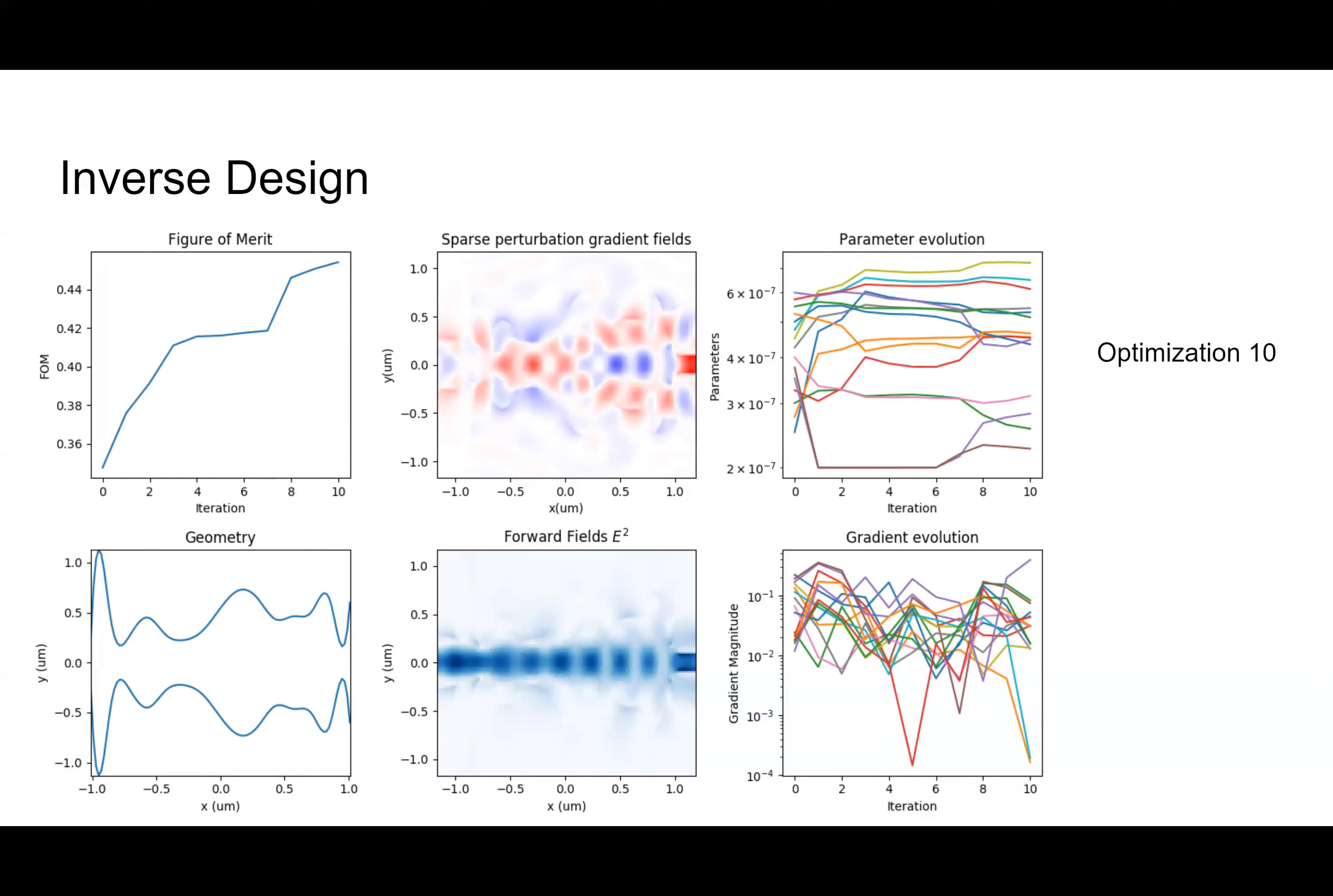Here we have an optimization from the middle, optimization 10. And now we have a figure of merit, which is increasing, which is what we want. The geometry is different. And this is not necessarily something someone would intuitively think to make for a Y-branch. It's very weird. It's very large here and very narrow over here.